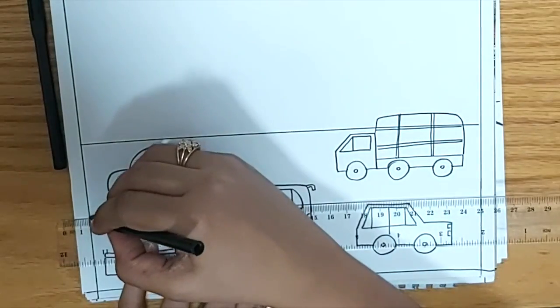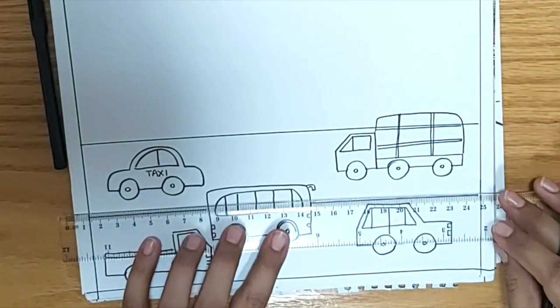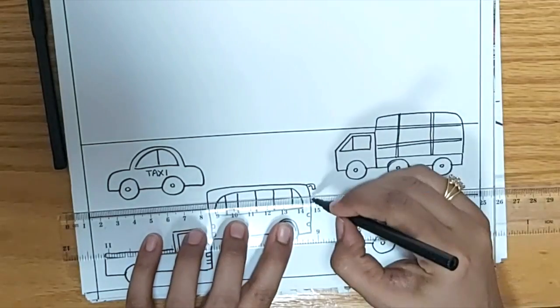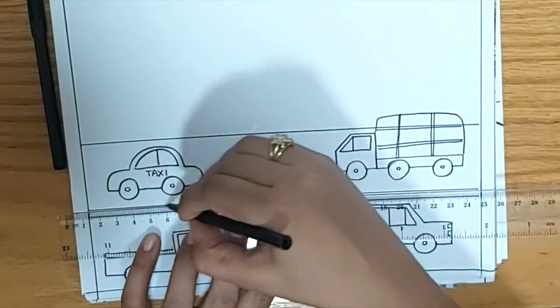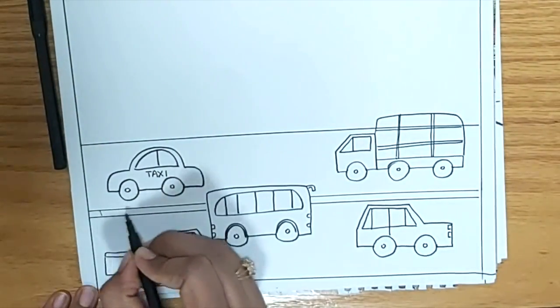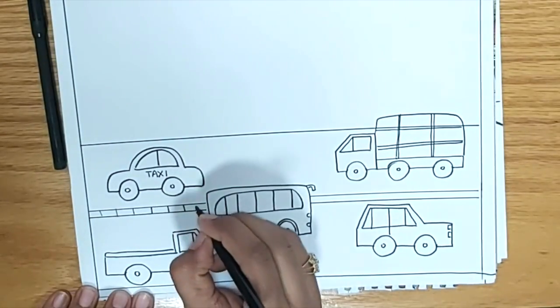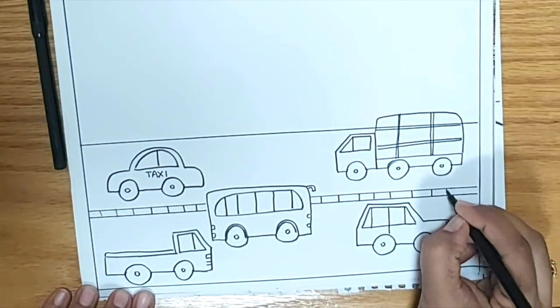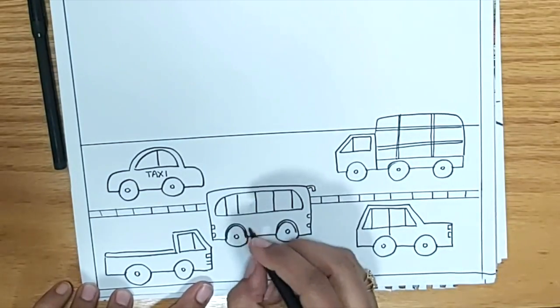I have written here taxi also so we know what transports we have shown. Now we are drawing the divider of the road to show the two sides, and we'll just section it because these are normally painted white and black or yellow and black on different roads. We can write school bus here.